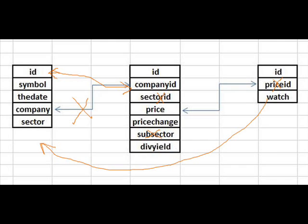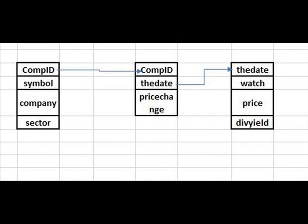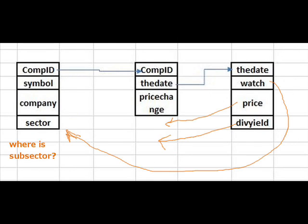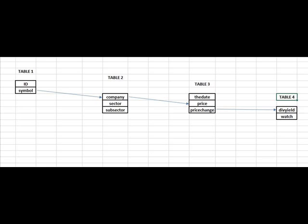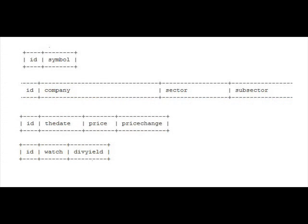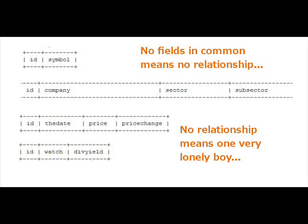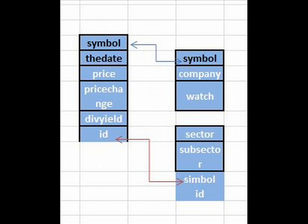They forgot the subsector field here. Again, company to price makes no sense; price change to div yield makes no sense. Get these organized. Every table has to have a relationship with another table — that means fields in common. This one's not too bad, just move a couple things, incorrect link — we can work with it.